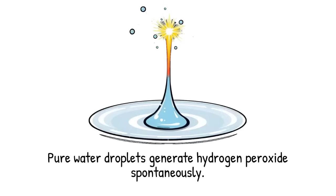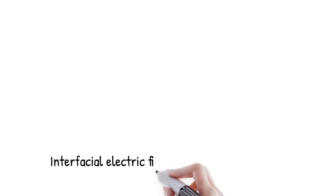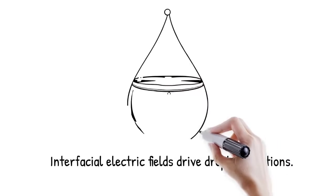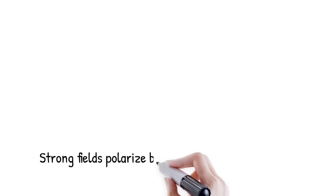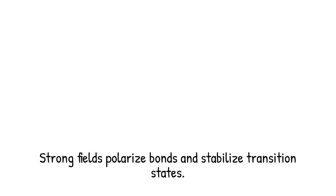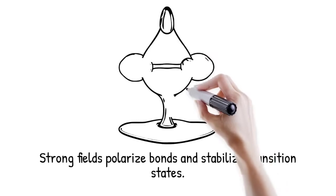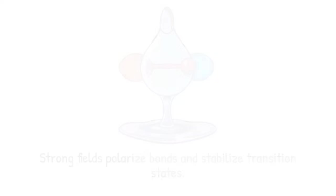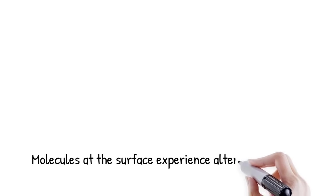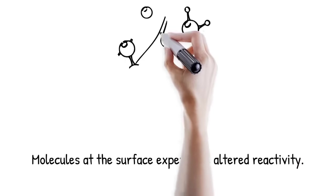The key to many droplet-specific reactions lies in interfacial electric fields. At curved liquid-air boundaries, charge separation creates localized fields of tens to hundreds of megavolts per meter. These fields are strong enough to polarize bonds, stabilize transition states, and promote electron transfer. Unlike uniform fields in bulk, these interfacial fields are localized and dynamic. Molecules at the surface feel forces that change their reactivity dramatically. The result is a catalytic surface that emerges simply from geometry and physics.